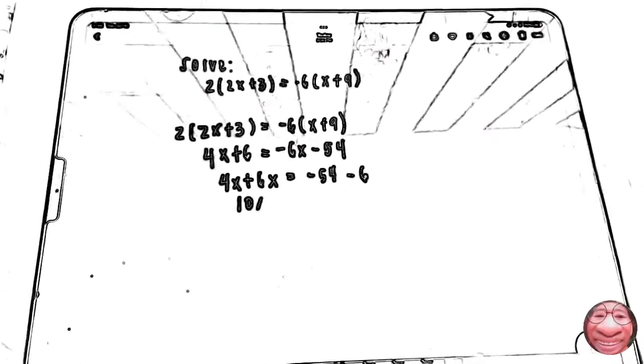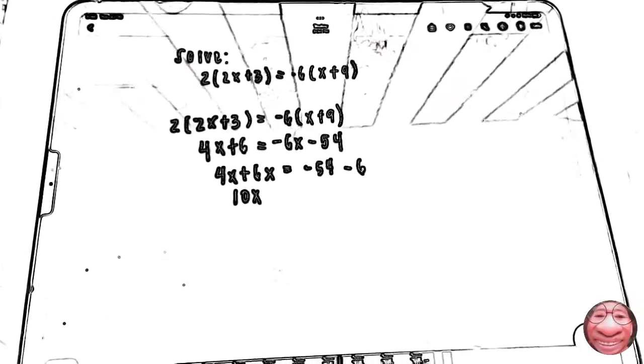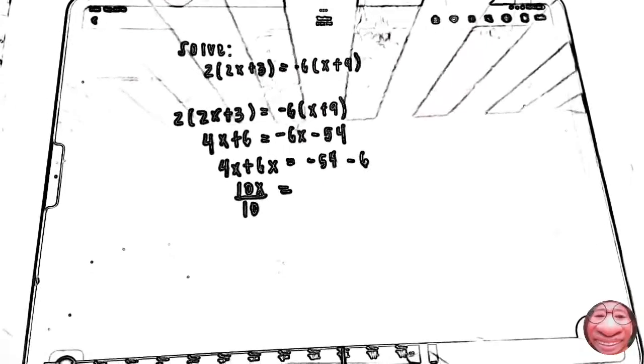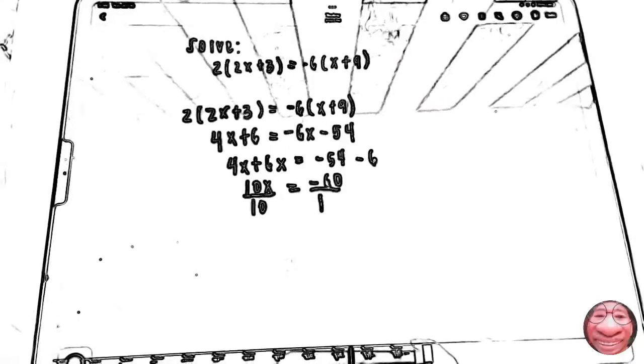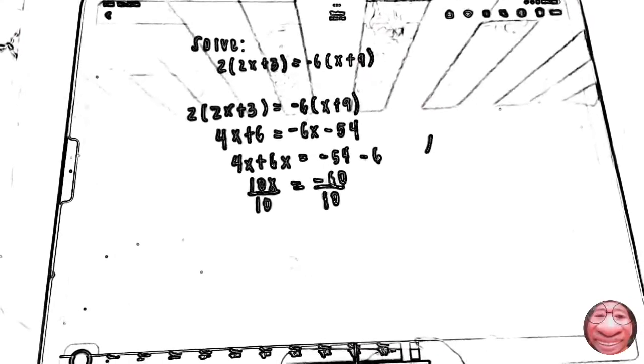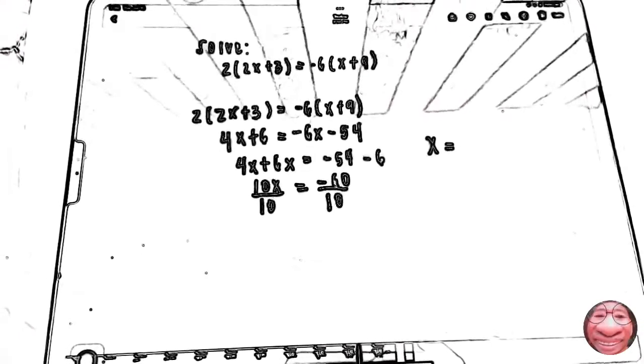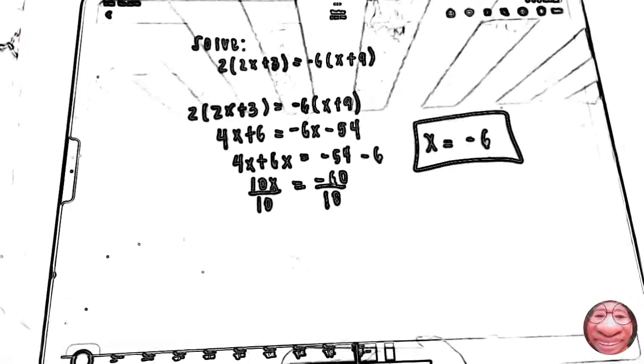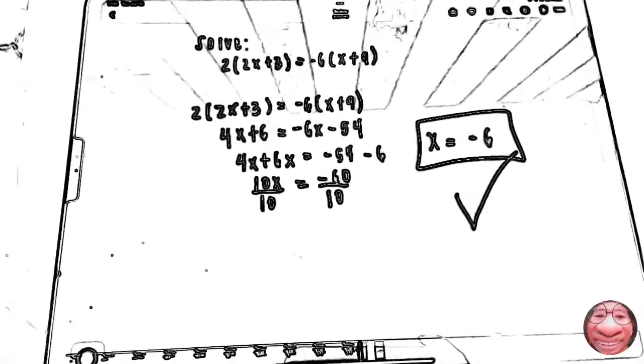Put all the x on the right side and move positive 6 to the left side. Now, it's negative 54 minus negative 6. Divide it by 10, then x is equals to negative 6 because of negative 60 divided by 10. Now, your answer is x equals negative 6.